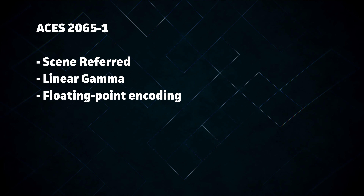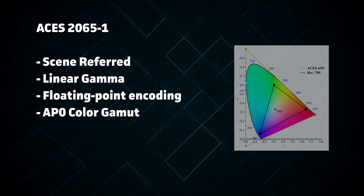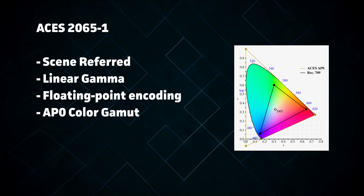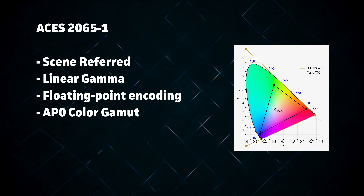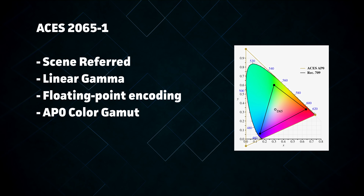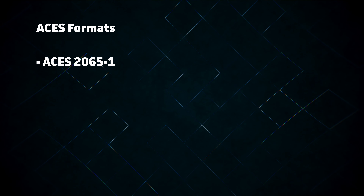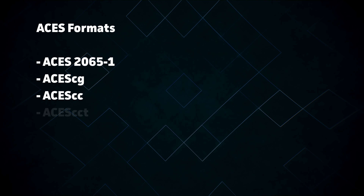The main format used by ACES workflows is called ACES 2065-1. This is a scene-referred format, meaning it uses a linear gamma combined with float encoding for unlimited dynamic range. It also uses an extremely large color space called AP-0, which encompasses every color in the visible spectrum as well as a few outside of it. This format is designed to contain any image regardless of its dynamic range or gamut without any loss of information. While ACES does utilize several other formats, ACES 2065-1 serves as the master format, bridging the gap between different programs and different phases of production.